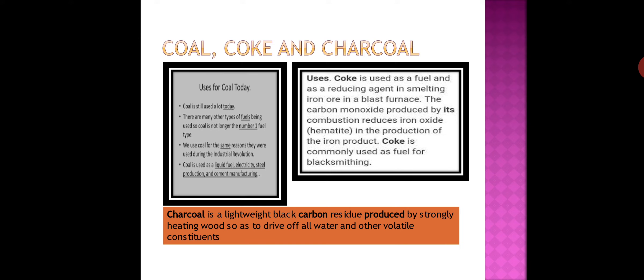Uses of coal: coal is used as a fuel in factories and homes. Coal is used to obtain coke, coal gas, and coal tar. Coal is used in thermal power plants for generation of electricity. The pure form that remains when coal gas has been taken away from coal is called coke. Uses of coke: coke is used as a domestic fuel, as a reducing agent, and in the production of water gas and producer gas.